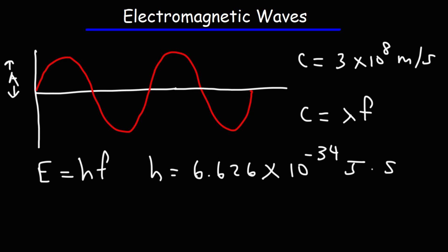There are a lot of different types of waves in nature. Think of an ocean wave — it has a crest and a trough. Think of a wave on a string. But an electromagnetic wave is different. This type of wave is composed of electric and magnetic fields. Thus, we have the name electromagnetic waves.